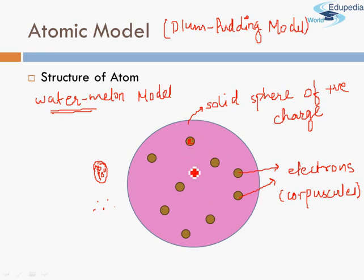So this is how the model was, and that is it that was all the model was about. So he further made some modifications later on. For example people started asking how the electrons will be embedded - are the electrons randomly embedded inside the sphere or do they form some kind of arrangement, some kind of pattern.